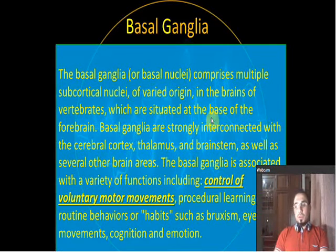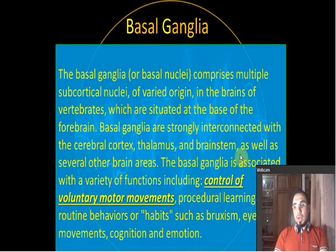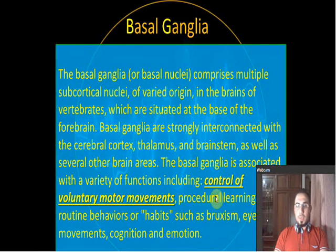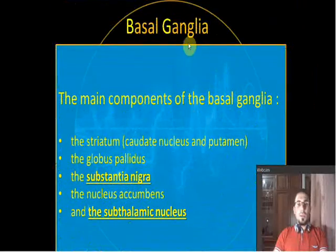For example, when you learn how to practice piano, that program is saved in the pre-motor and motor areas but also in the basal ganglia, because the basal ganglia are related to these kinds of movements. Some textbooks also include cognition and emotions, but the key function to understand is coordinating voluntary motor movement.